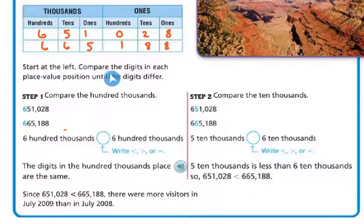So if I start at the left and I compare the digits in each place value position until the digits differ. So here's the left. I have 600,000 and another 600,000. So those are the same. So there are 600,000 are equal to the other 600,000, right?